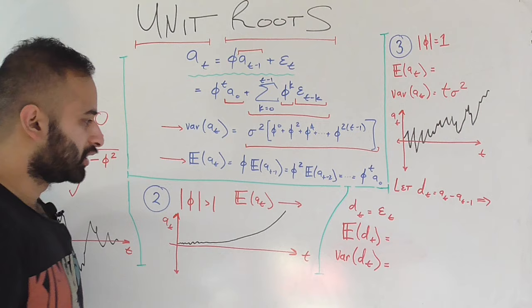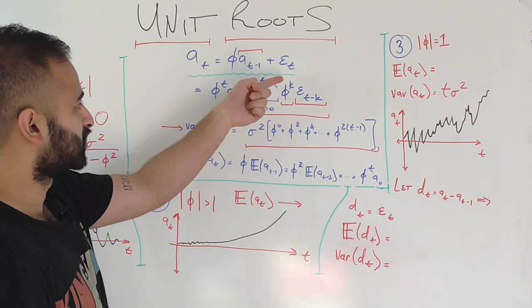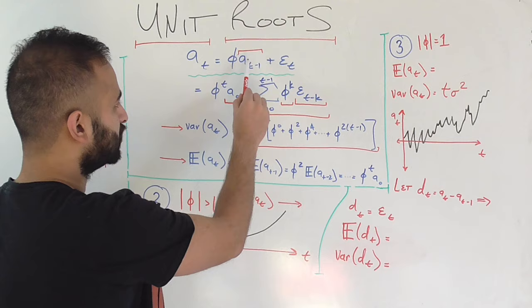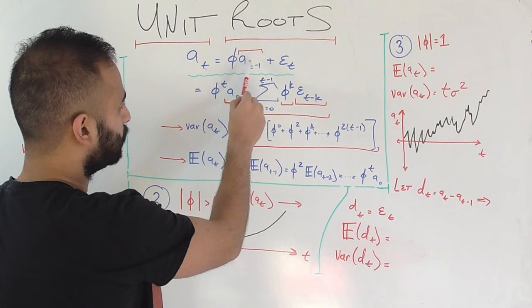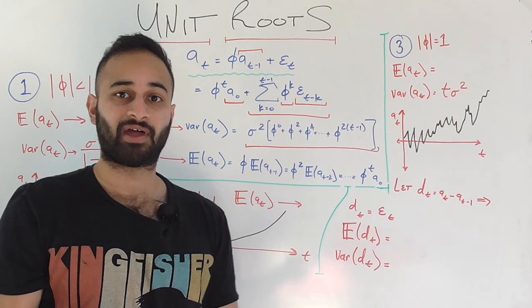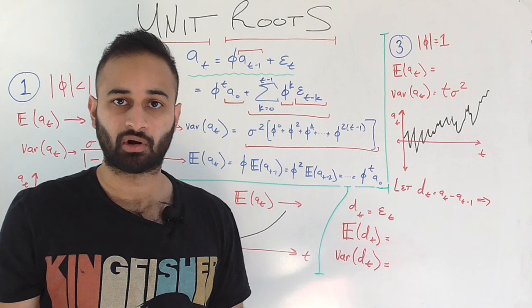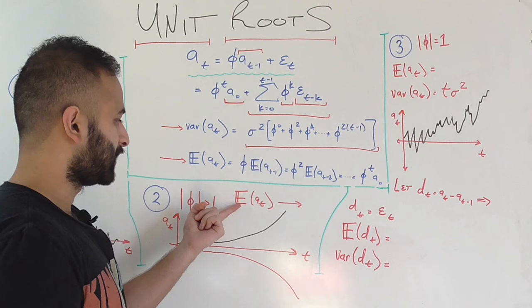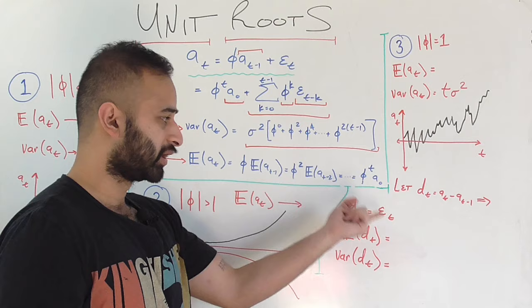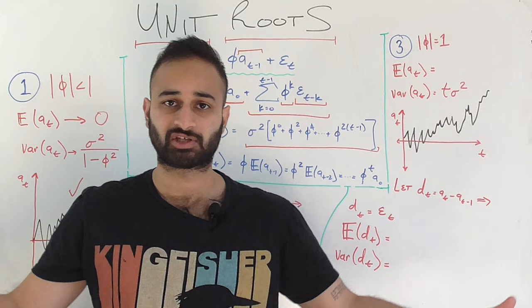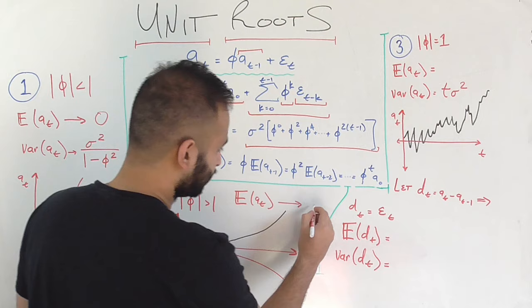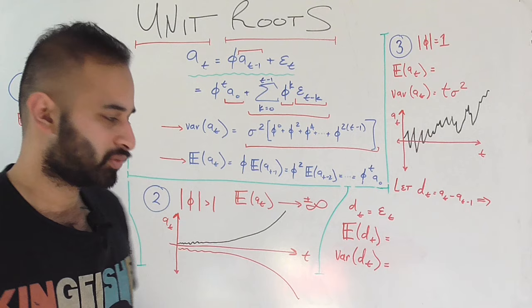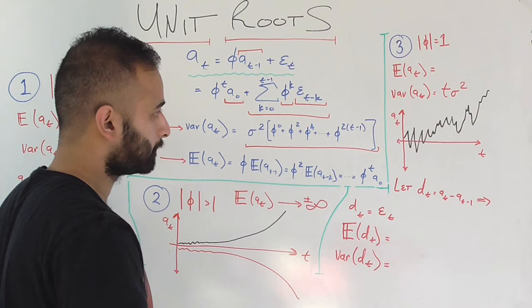Case two: the absolute value of phi is bigger than one. Before doing any math, you can tell what will happen just by looking at the expected value formula. If phi is something like 1.5, the time series on average would explode — starting at A_0, multiplied by 1.5 each iteration, skyrocketing in a positive or negative direction over time, which is exactly what we see in this graph. Mathematically, since |phi| > 1, phi^t raised to bigger and bigger exponents goes to positive or negative infinity. So the expected value diverges, and for that reason alone, the time series is not stationary.